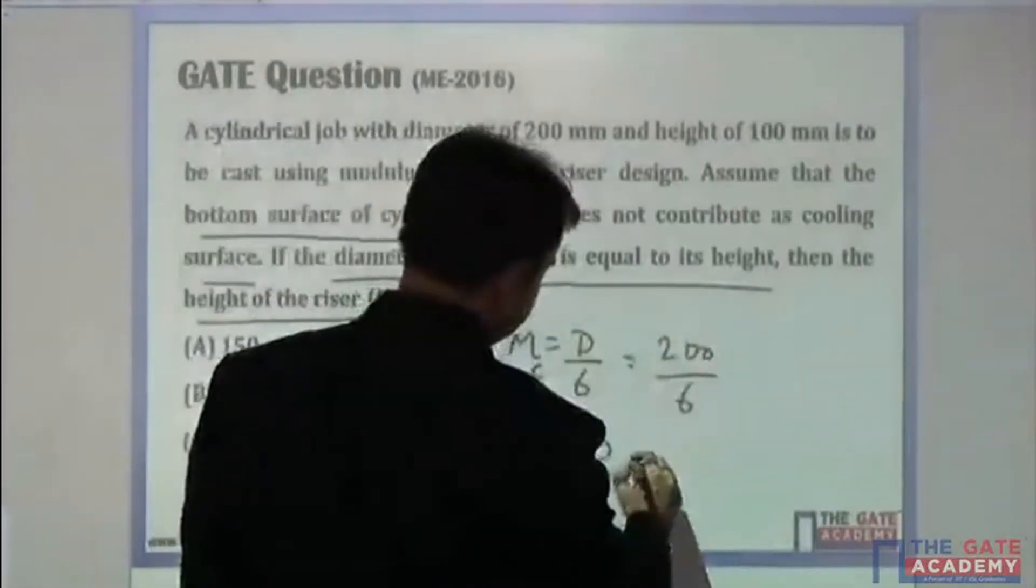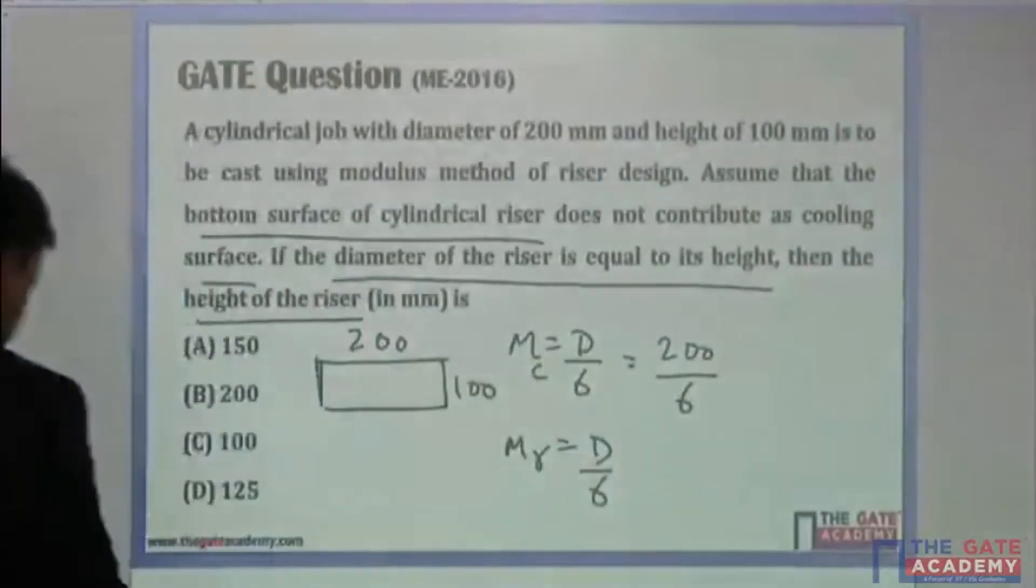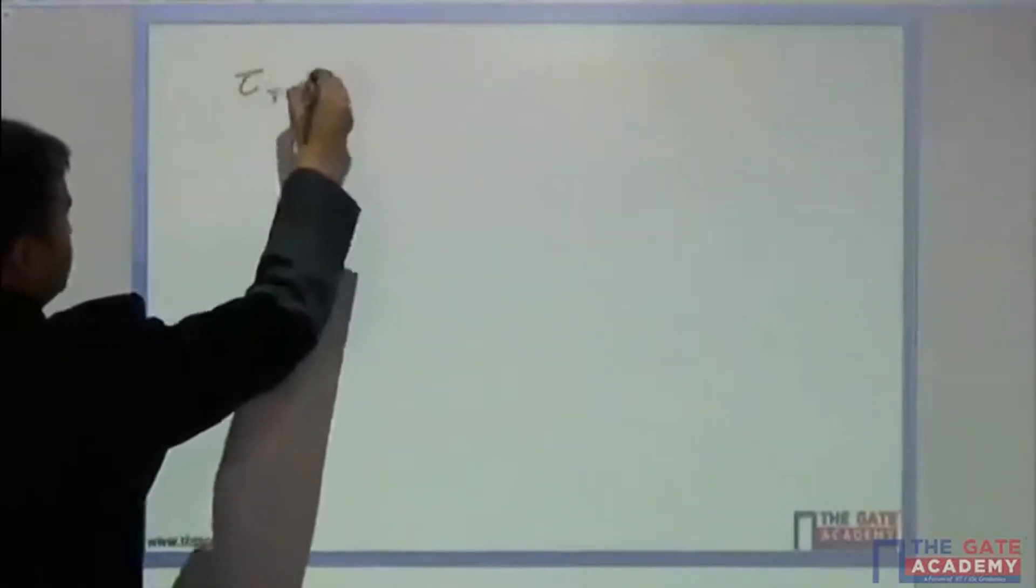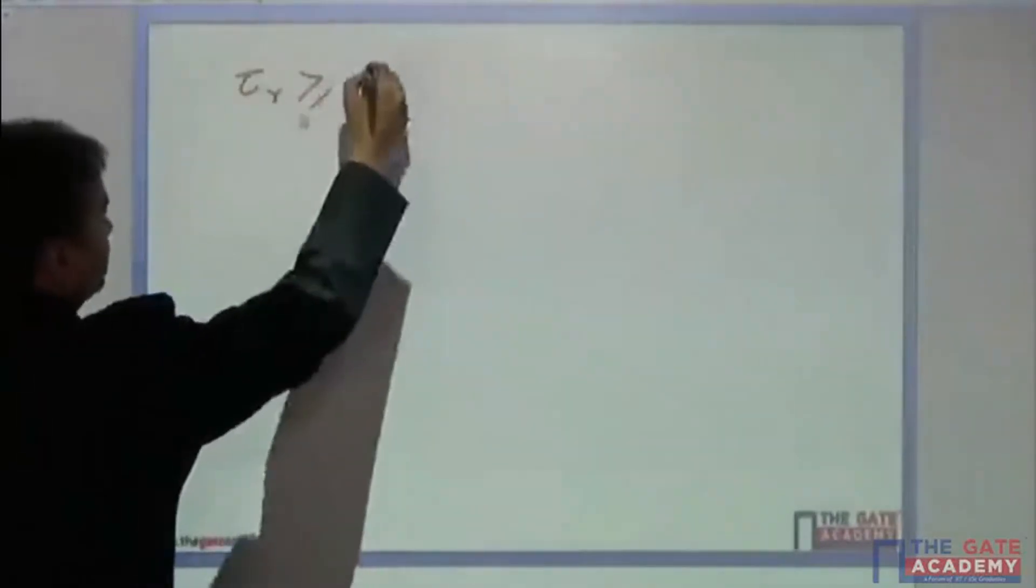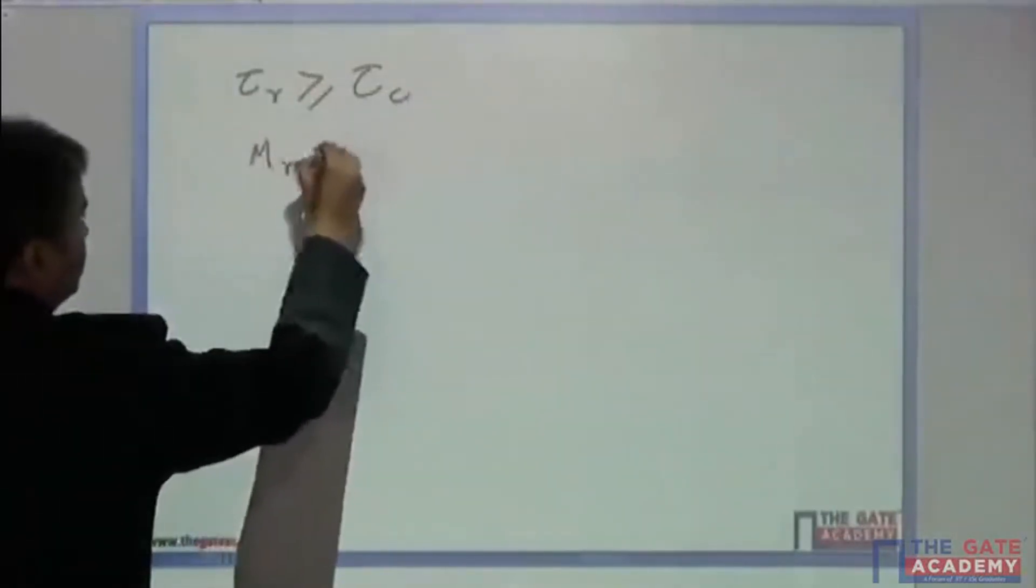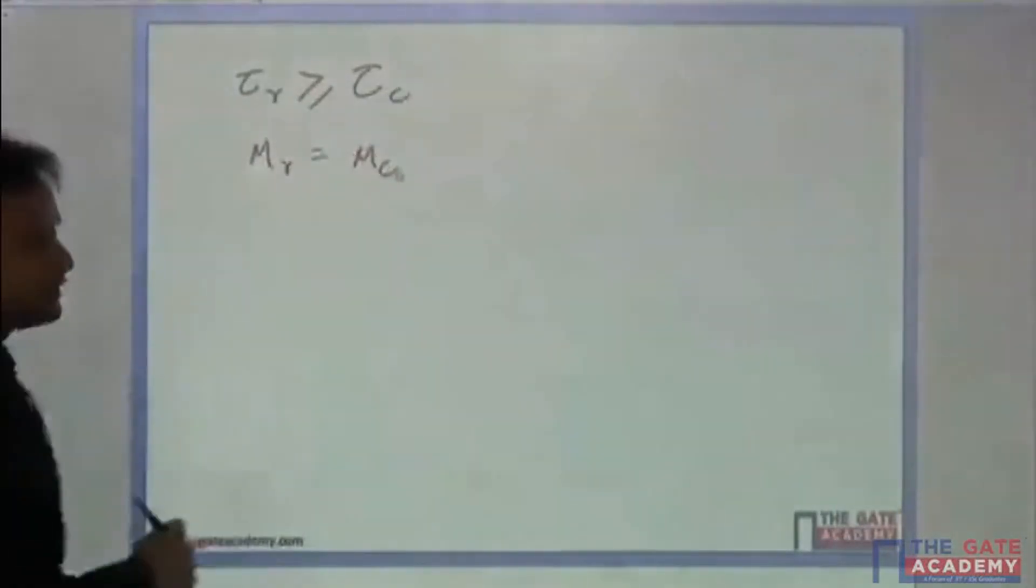The modulus is used to calculate solidification time. The solidification time of the riser should be always greater than or equal to the solidification time of the casting. Let's assume mr equals mc in the worst case scenario.